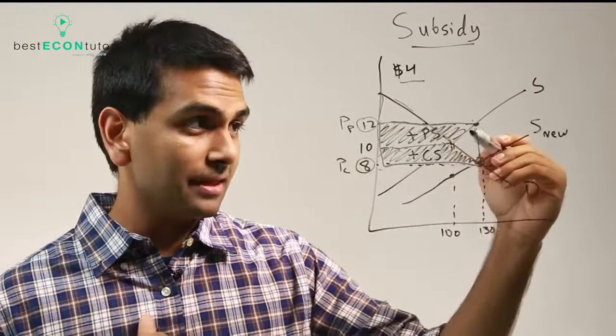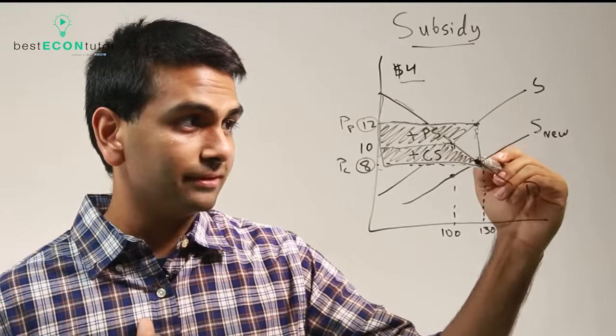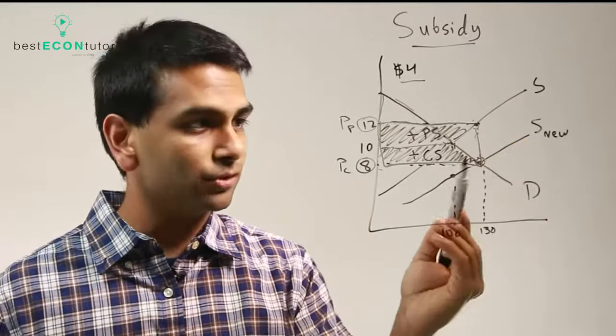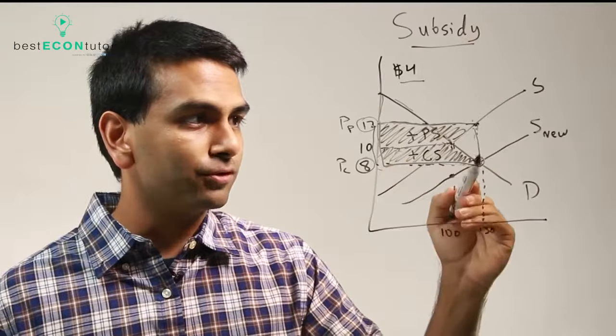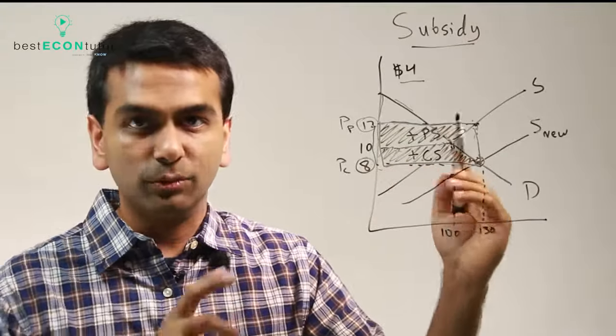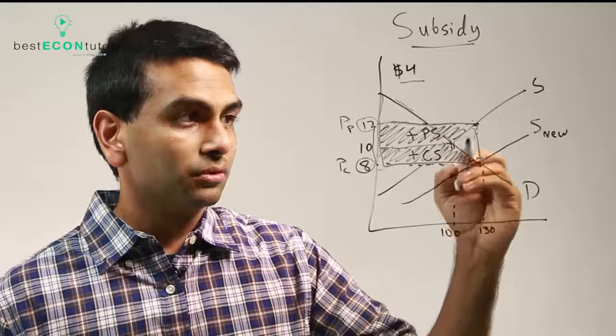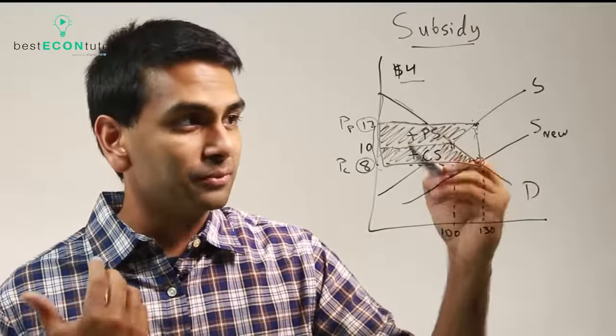The reason is because this gap vertically from 8 to 12—that's four times the quantity of 130, that's a rectangle. So you have to subtract that much out, that's how much the government pays. When you get rid of that, you actually got rid of more than we added.